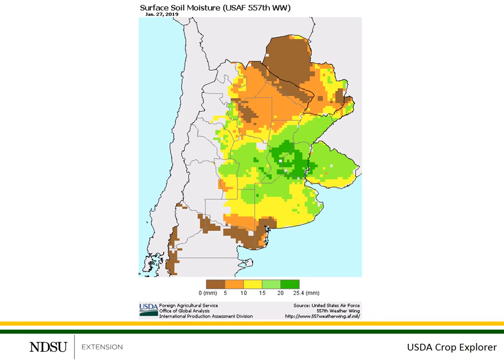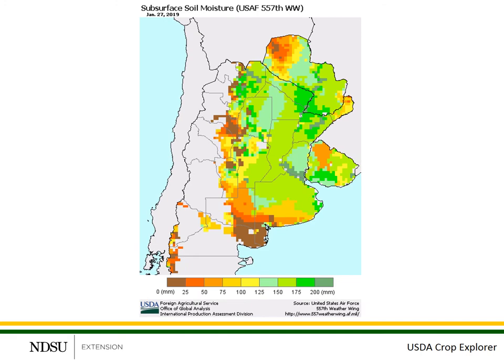This is the computer-generated estimate of surface soil moisture conditions in Argentina. That core soybean producing region in the central portion of the country has adequate to surplus soil moisture. Planting progress was a little bit slow this spring, but weather conditions have been favorable for crop development since then. The computer-generated estimate for subsurface soil moisture conditions in Argentina also shows that the major soybean producing region has adequate subsurface soil moisture conditions. So there are really no significant problems showing up at this point.